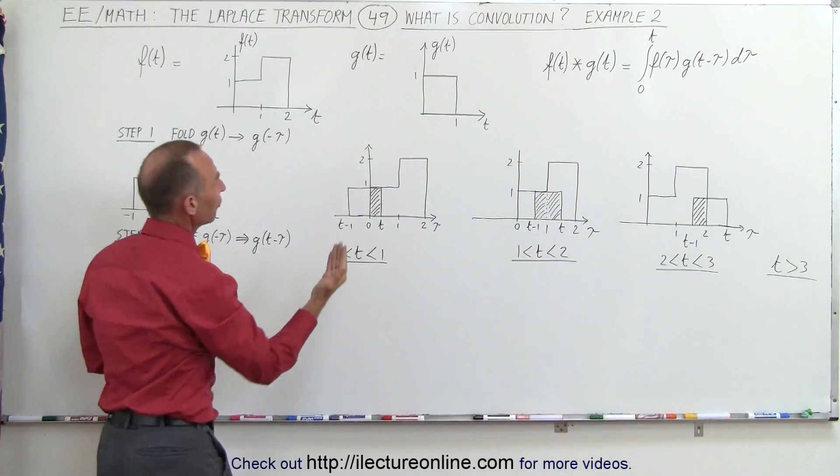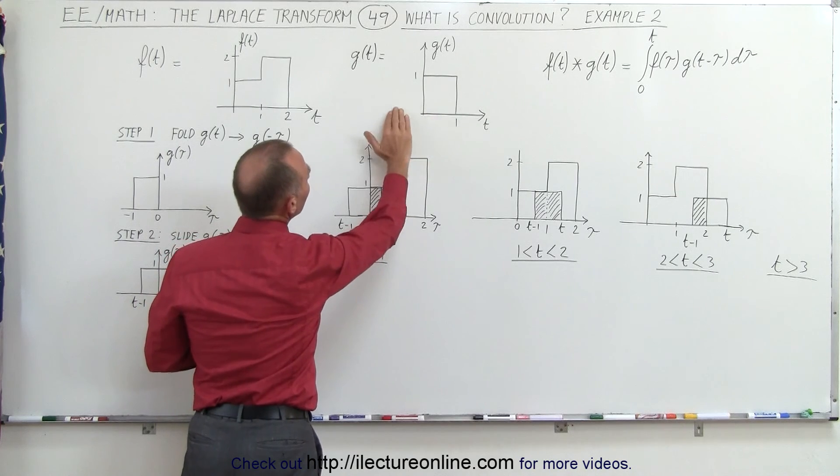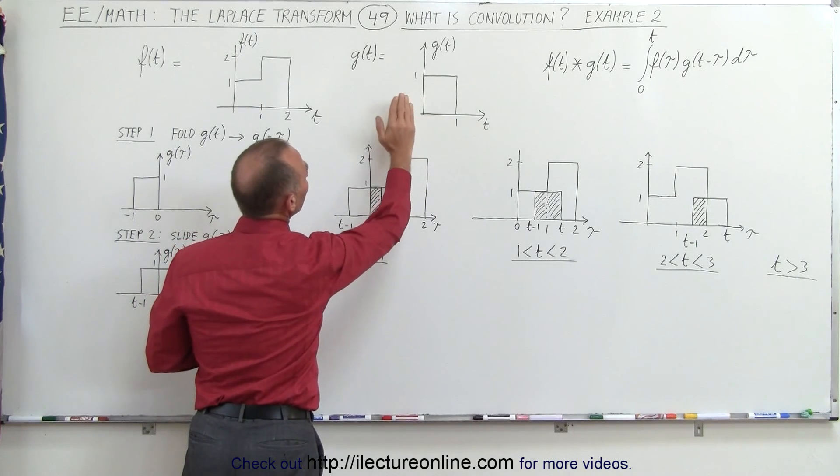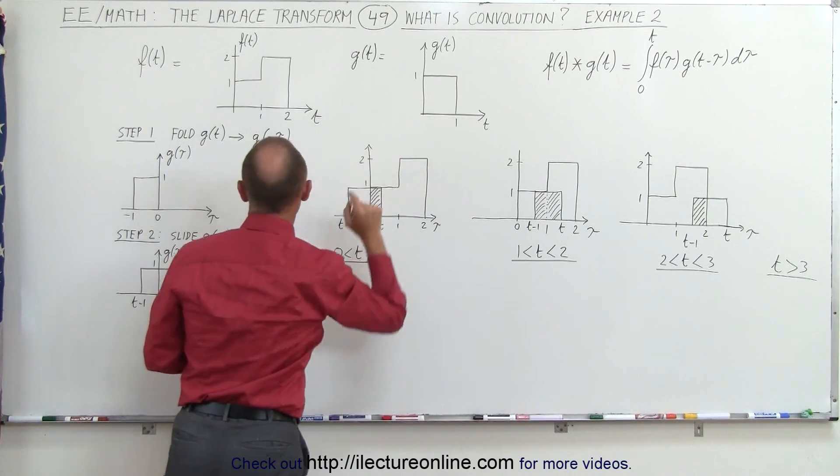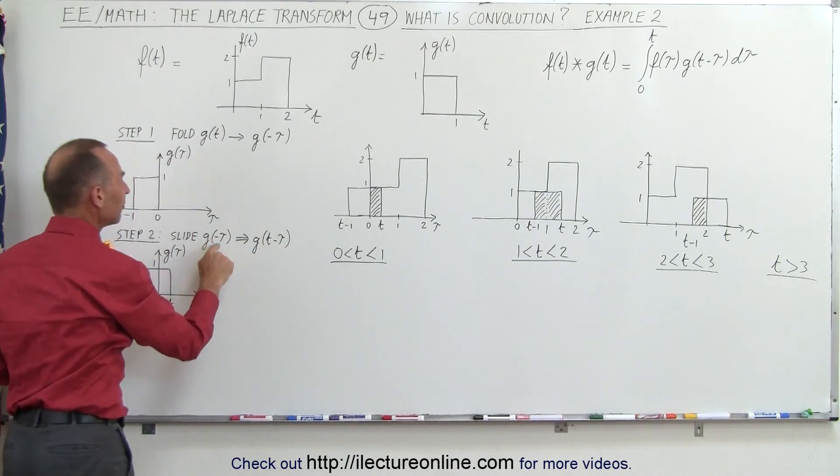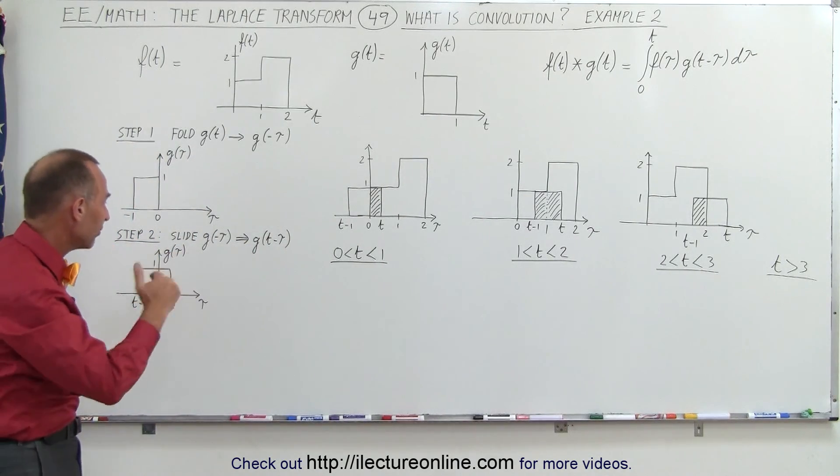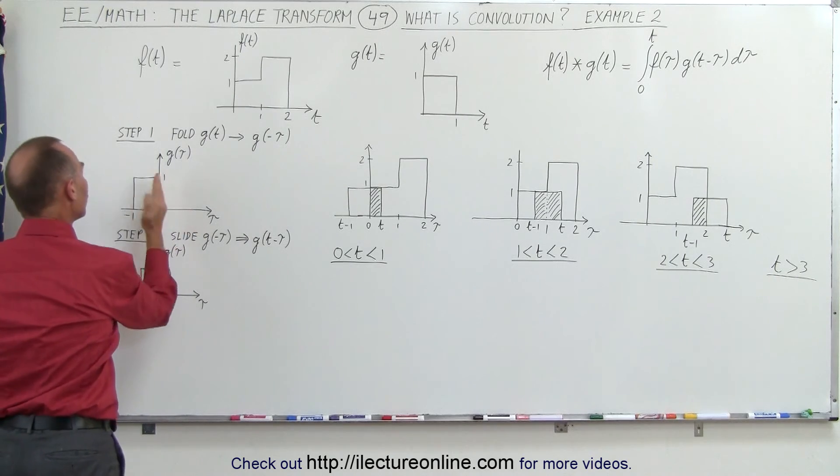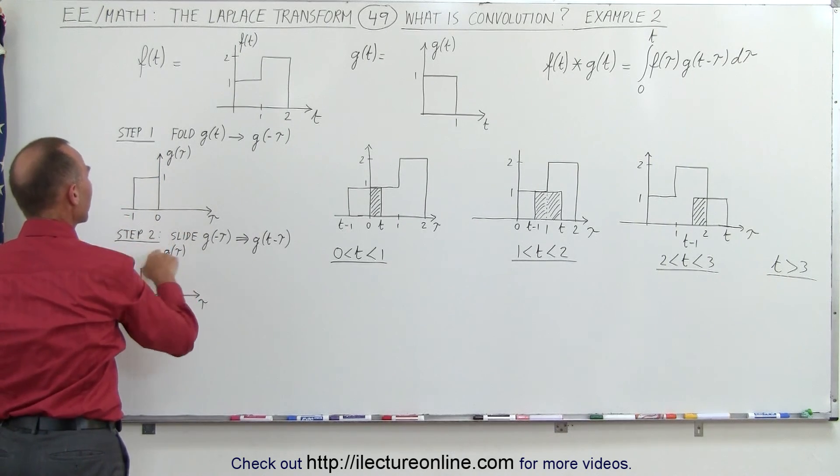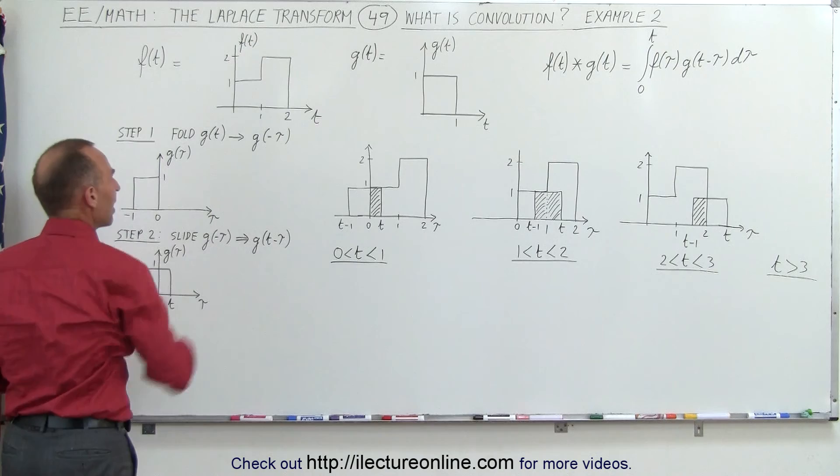Well, what we do first is we fold g of t. We simply get the mirror image about the vertical axis of g of t, and we get g of negative tau. Again, we use the dummy variable tau, we simply fold over g of t, and we make that into g of negative tau.